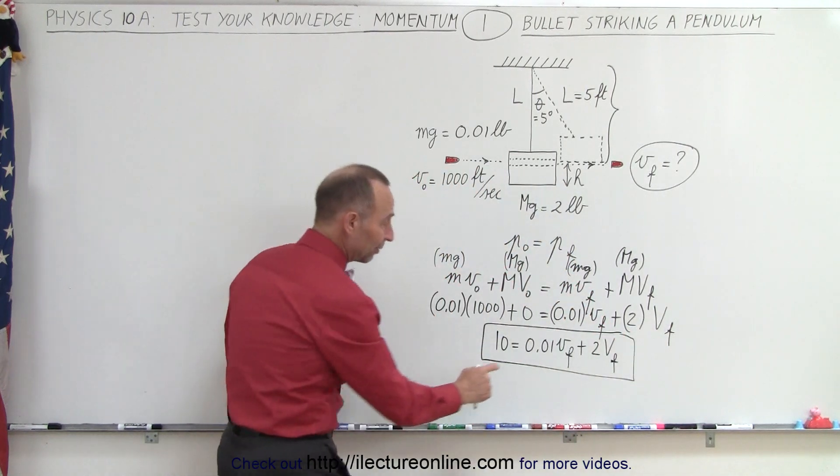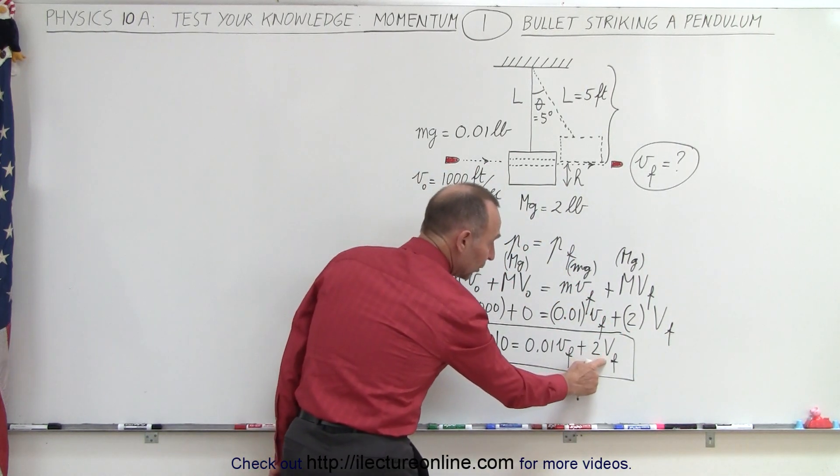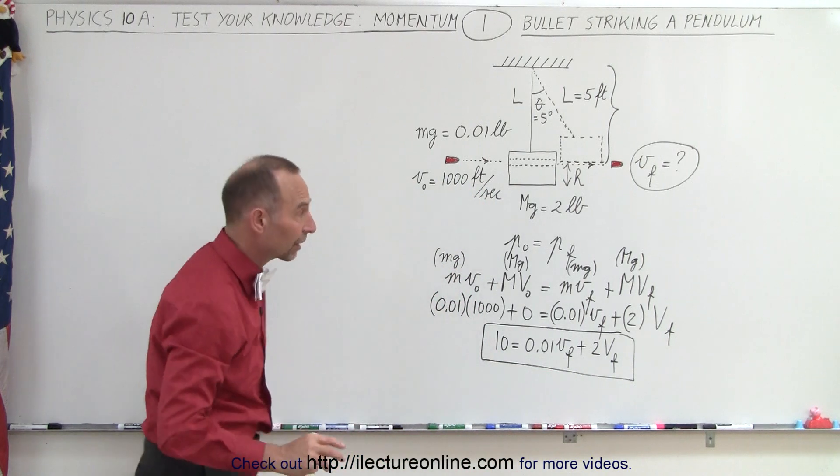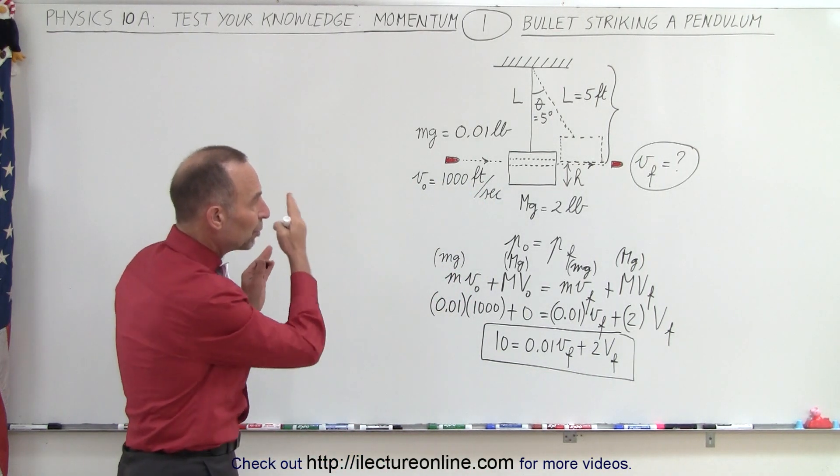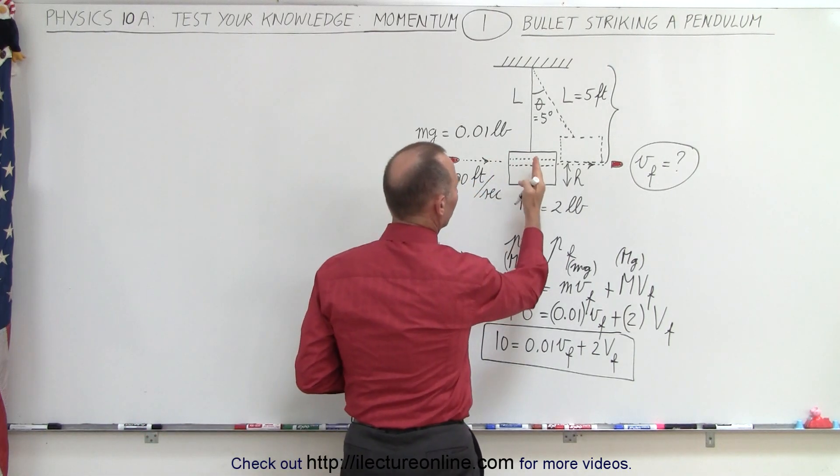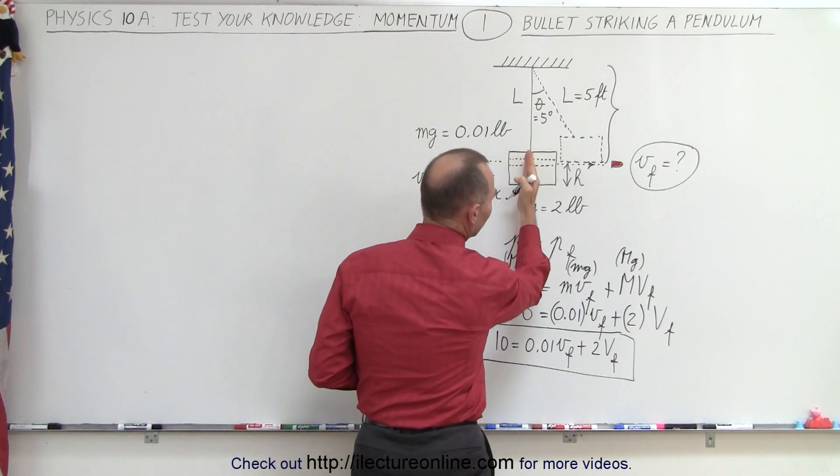In order to figure out what the final velocity of the bullet is, we need to know what the final velocity of the block is. For that we can use the second part of the problem where we use conservation of energy.